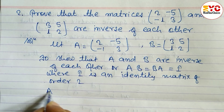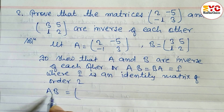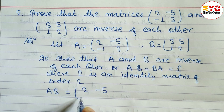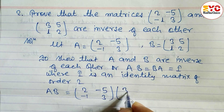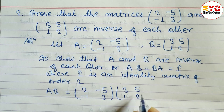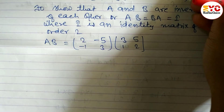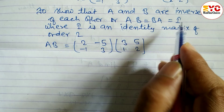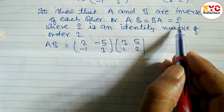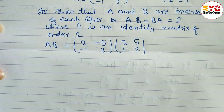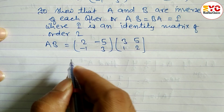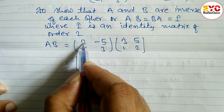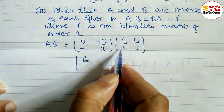Now we have to find the product of AB. Matrix A is [2, -5; -1, 3] and matrix B is [3, 5; 1, 2]. We also have to find the product of BA and check whether they equal the identity matrix, which is [1, 0; 0, 1]. Let's multiply by rows into columns.